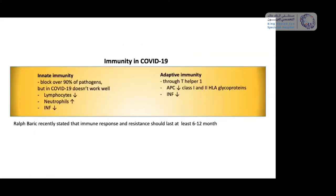The problem with COVID-19 is that immunity doesn't work well. The innate immunity that blocks over 90% of pathogens doesn't function well in COVID-19. We have a decrease of lymphocytes, increase of neutrophils, and a decrease in interferon. The adaptive immunity also seems to work differently — basically through TH1 — but we have a decrease of antigen-presenting cells, class 1 and 2 HLA, and also decreased interferon-gamma.